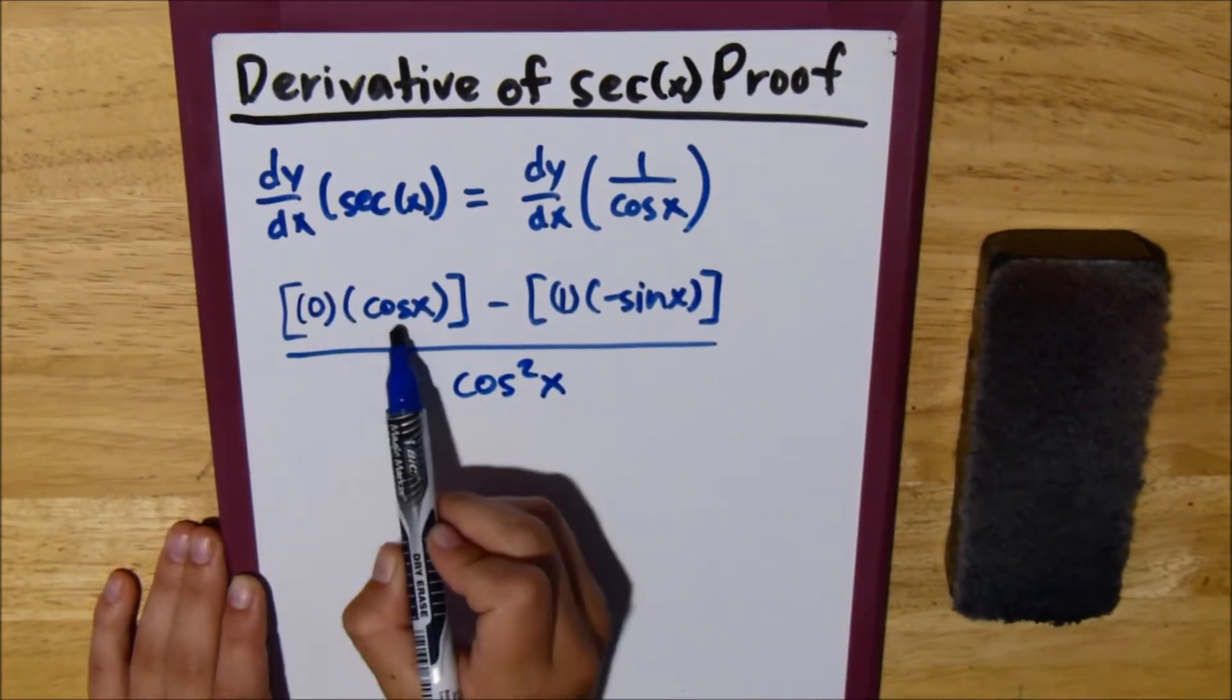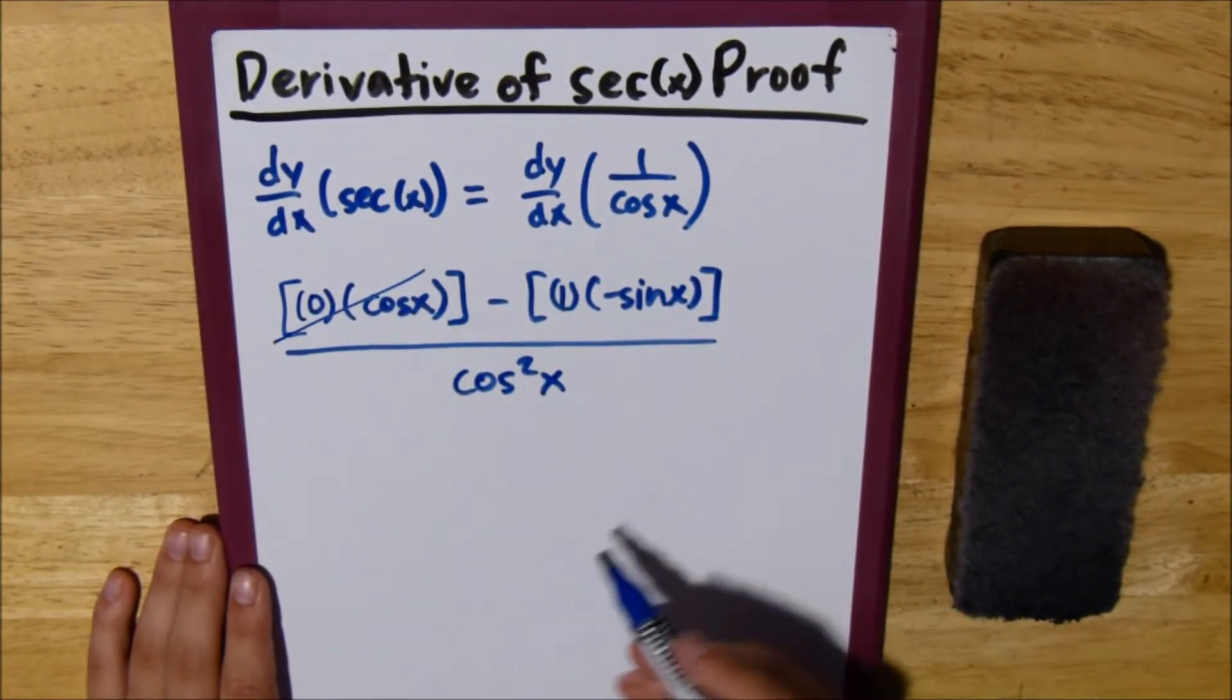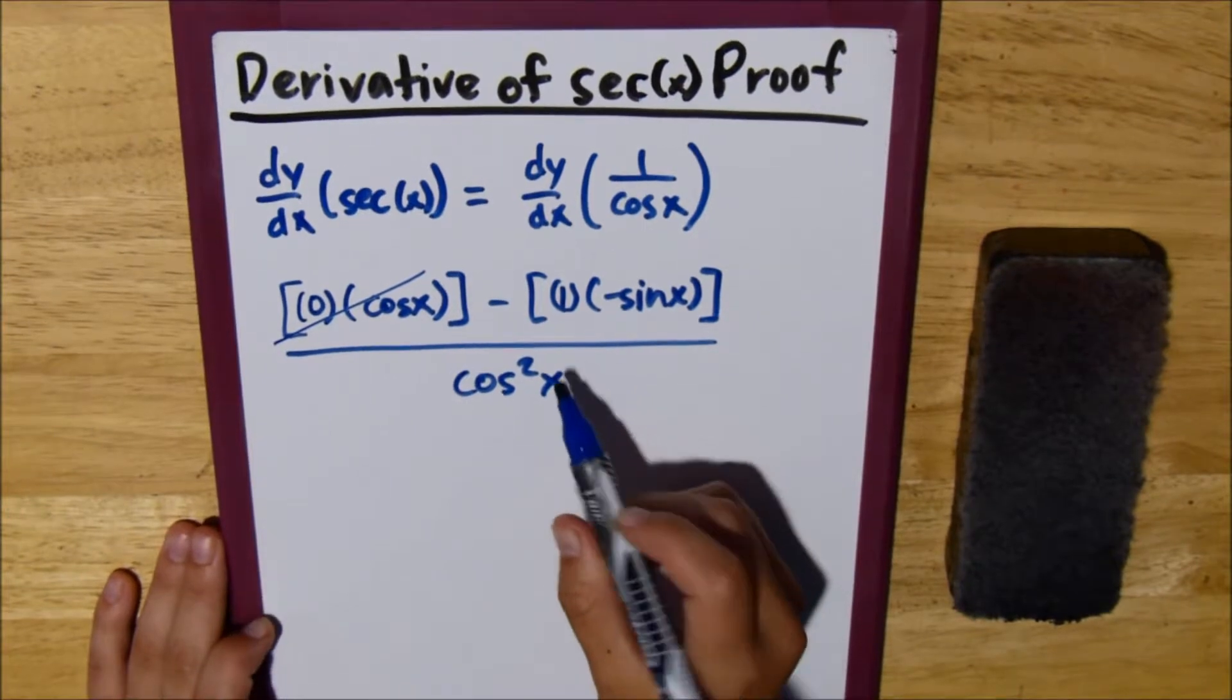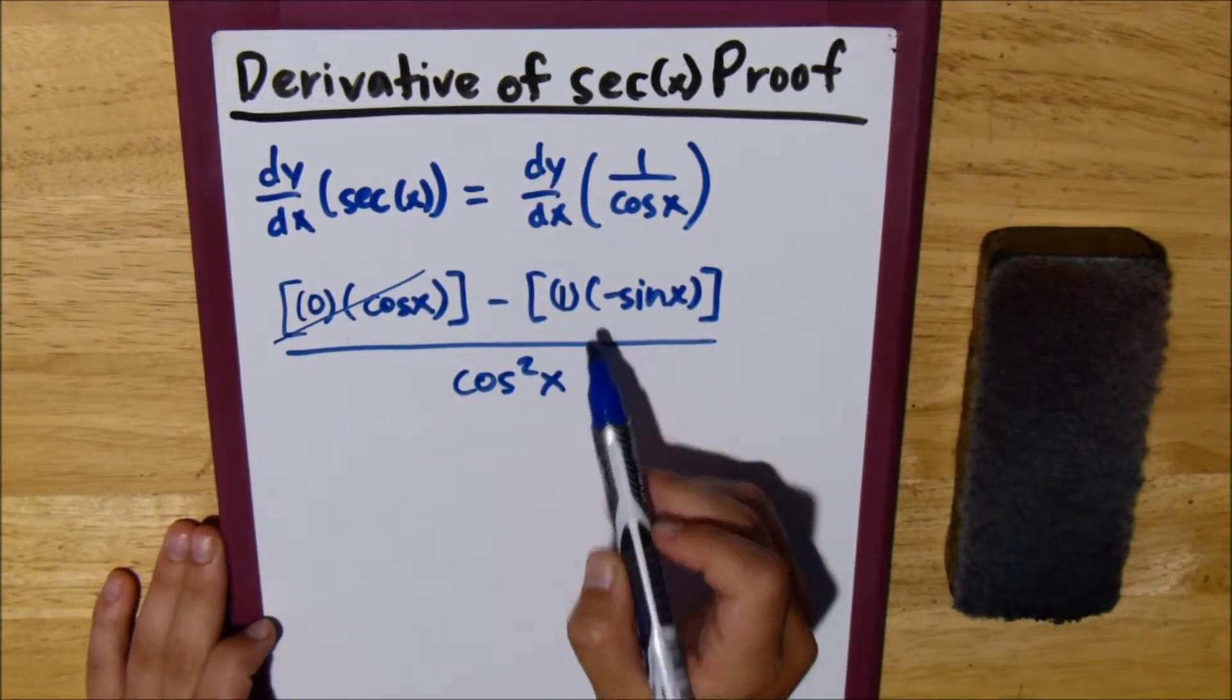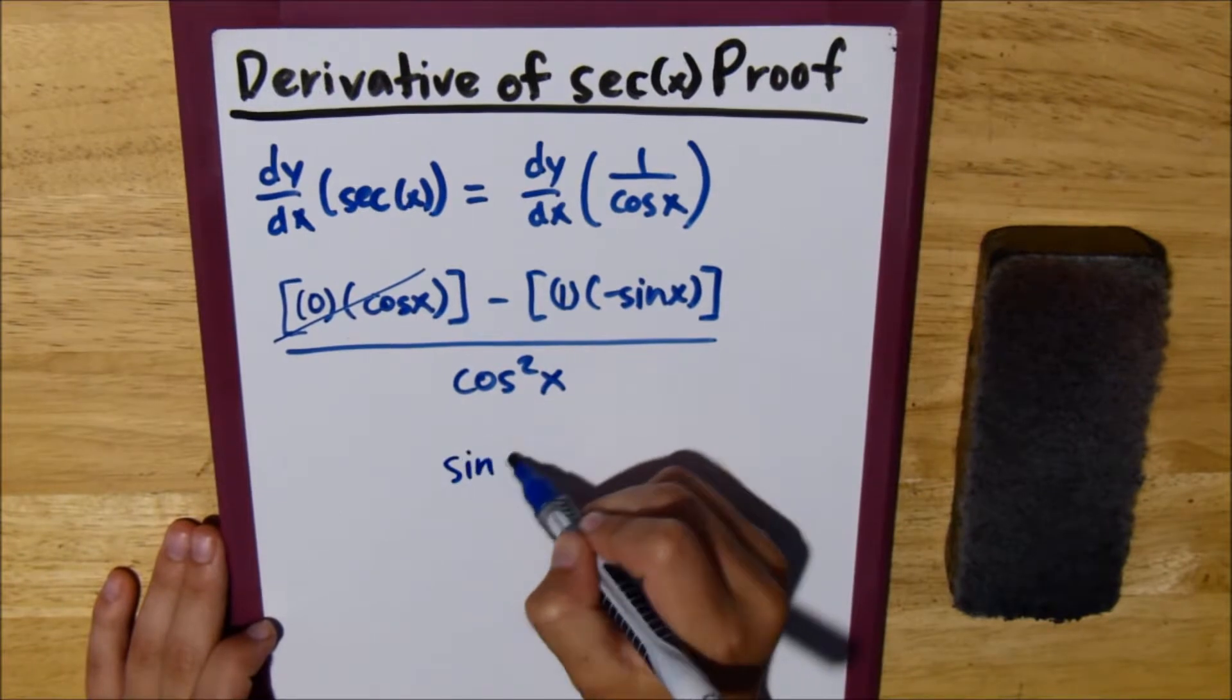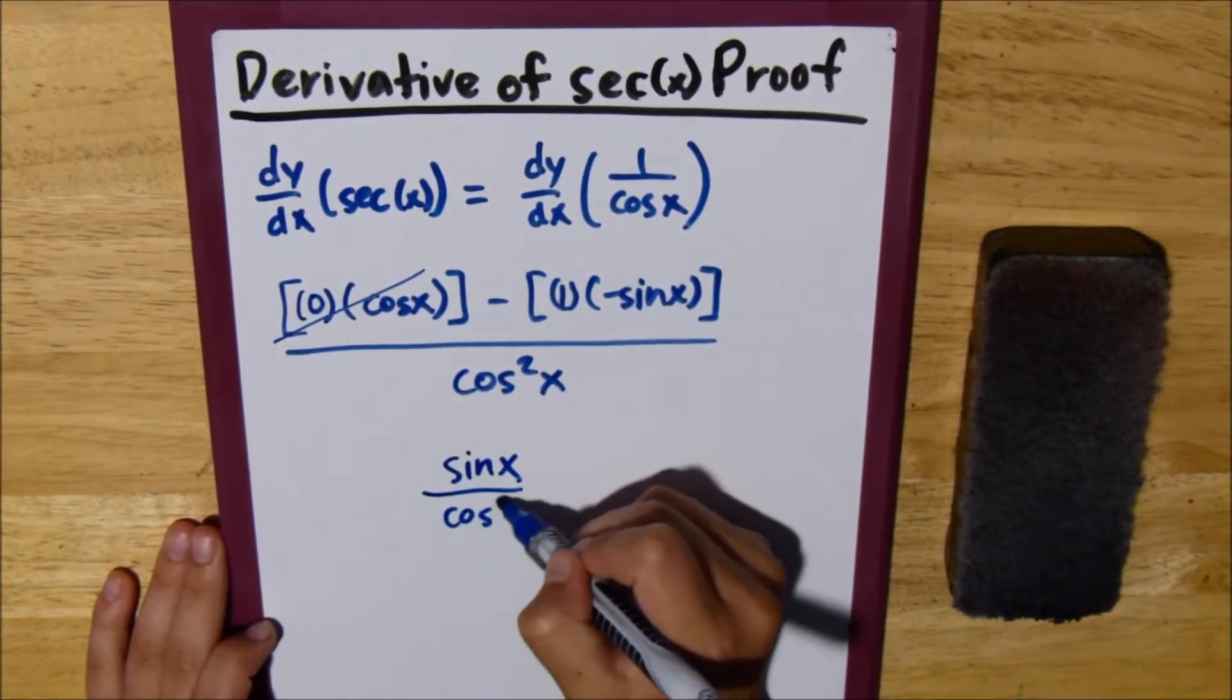0 times cosine of x just cancels, and in the numerator, we have a negative and a negative makes a positive. So we have sine of x over cosine squared x.